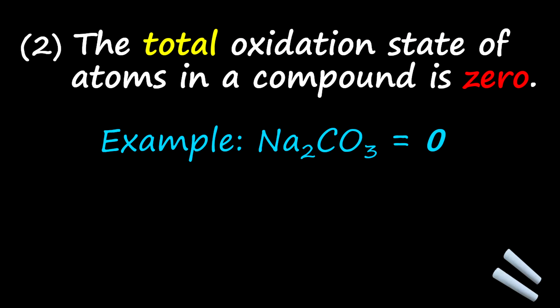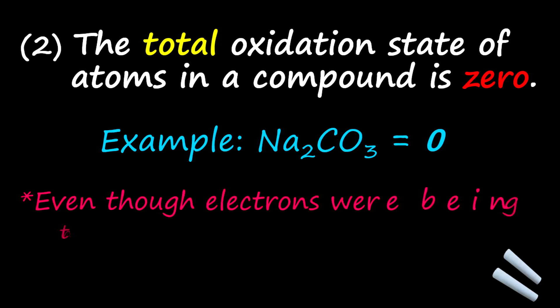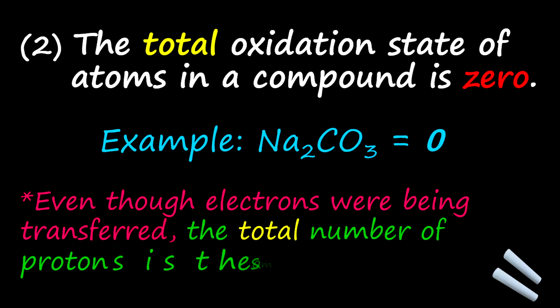A compound was formed, that means electrons were transferred or even shared, right? So even though electrons were being transferred, the total number of protons is the same as there are number of electrons. The total compound still contains the protons and the electrons from the original elements. So together, the total charge is zero.